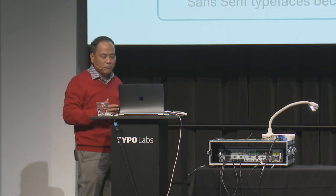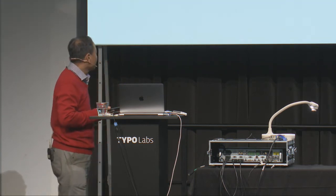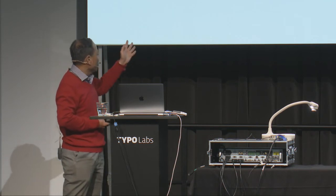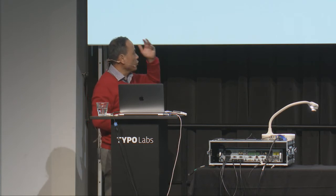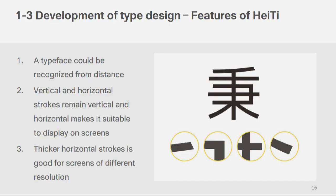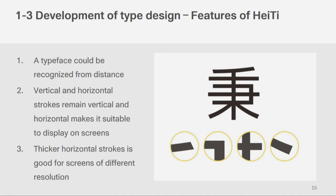Later on, we tried to develop a responsive font, because of the proliferation of mobile devices and high-resolution screens. Digital reading is replacing reading on paper — paper is already going down in Taiwan, and I think it's the same in the US. Sans-serif typefaces have become mainstream. In the paper era, content used Songti, but right now for digital reading, Heiti is always used — it's like Gothic. Gothic has characteristics where the strokes can be recognized from a distance, and the vertical and horizontal strokes remain straight, suitable for display on screen. Thicker horizontal strokes are good for screens of different resolutions.